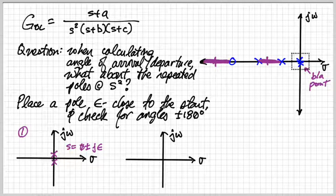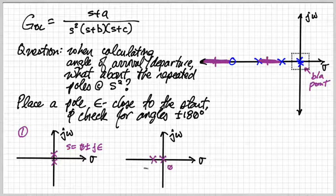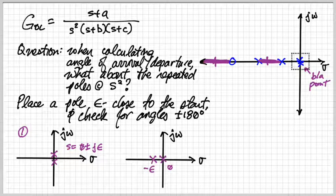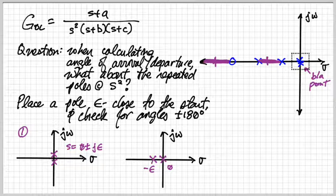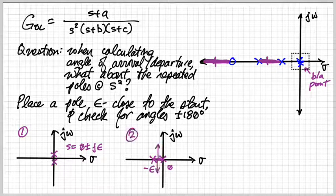Option two is to leave the first pole where it is at the origin and place the second pole negative omega to the left. So if you move one of the poles just a little bit to the left, how will this affect it? So that's option two.